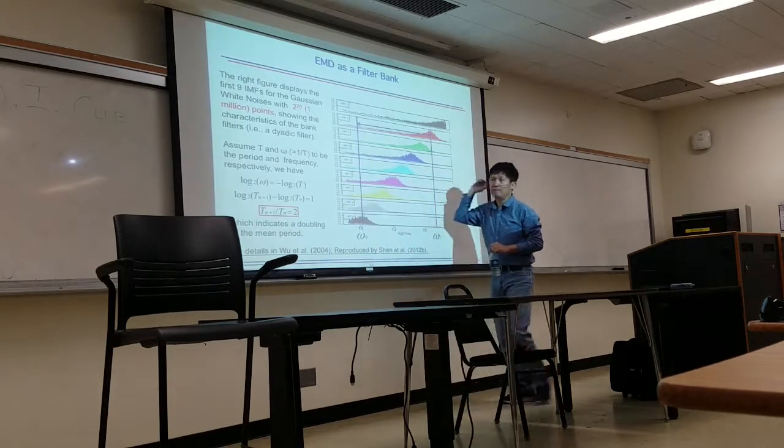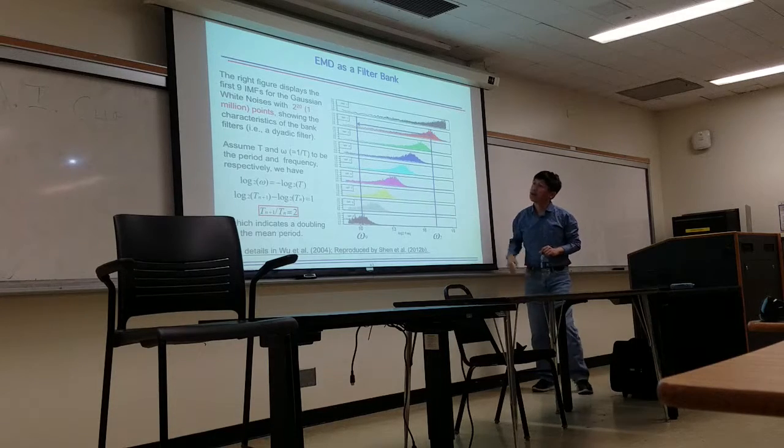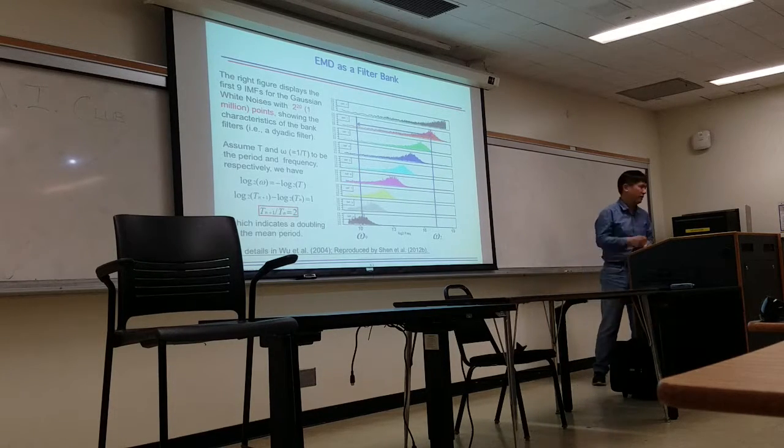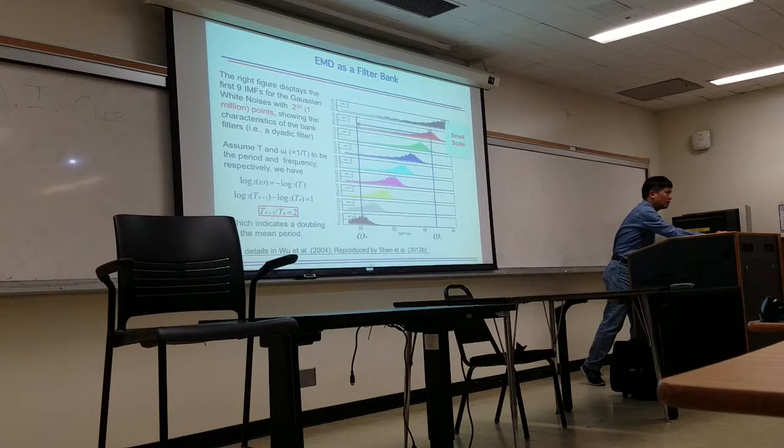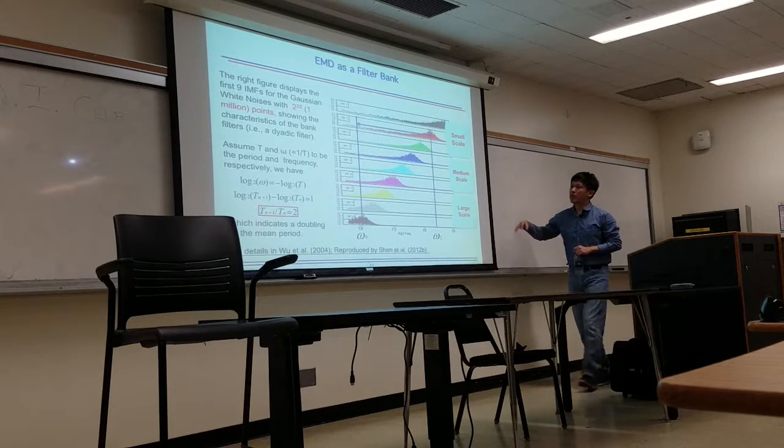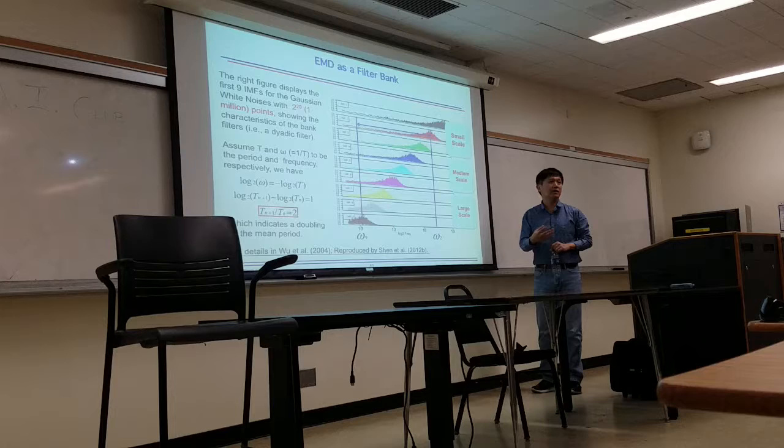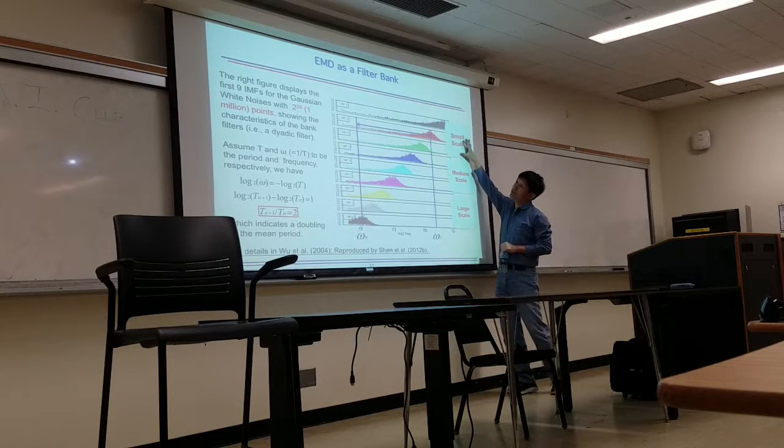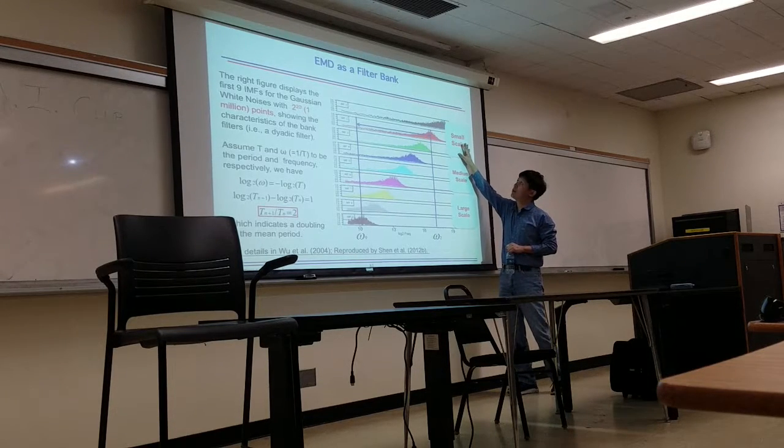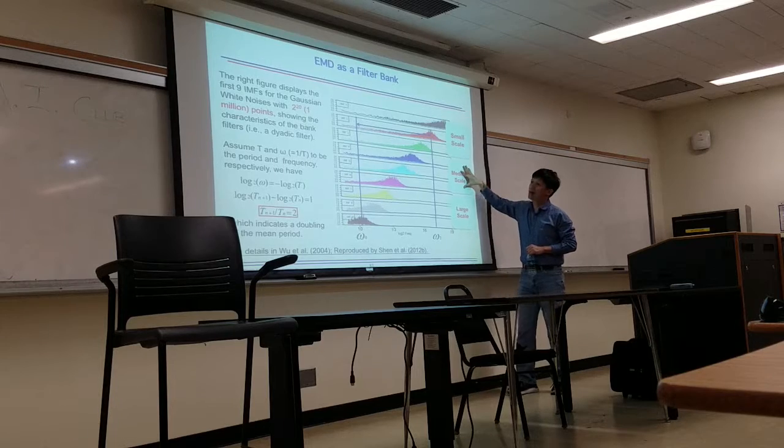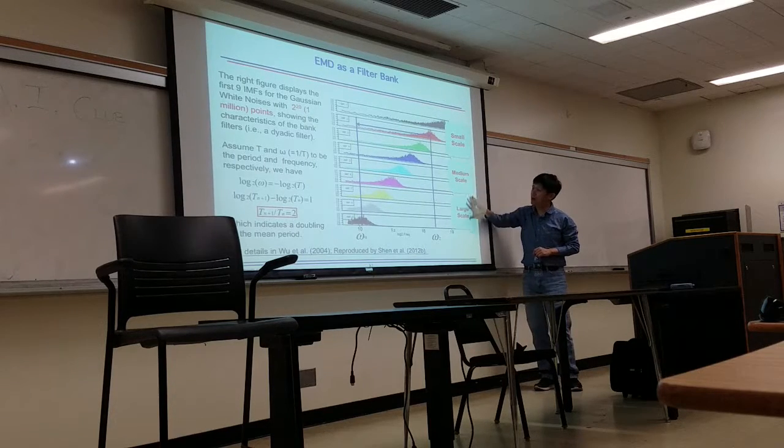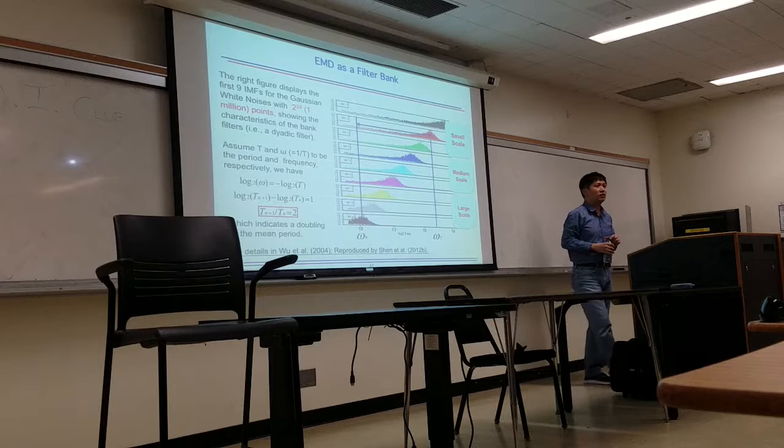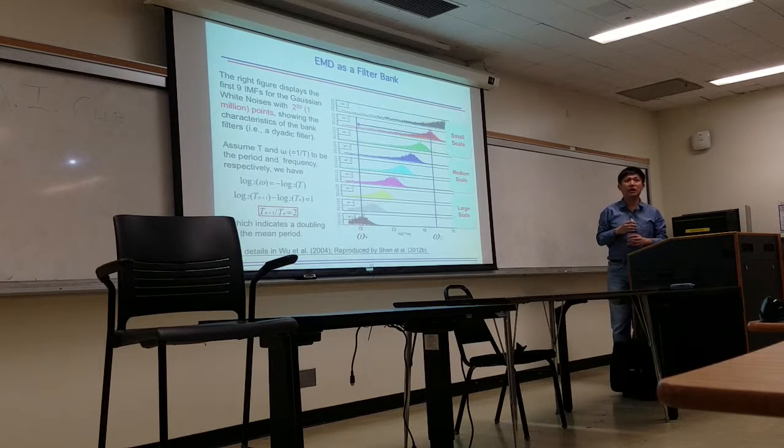So because of these features, I know, also the previous one, we say EMD works as a filter bank. So in this case, we have the nine modes, right? We can further simplify. We can group the first three as a mode with a small scale, and the middle one has a medium scale and a large scale. This kind of classification just simplifies discussions.